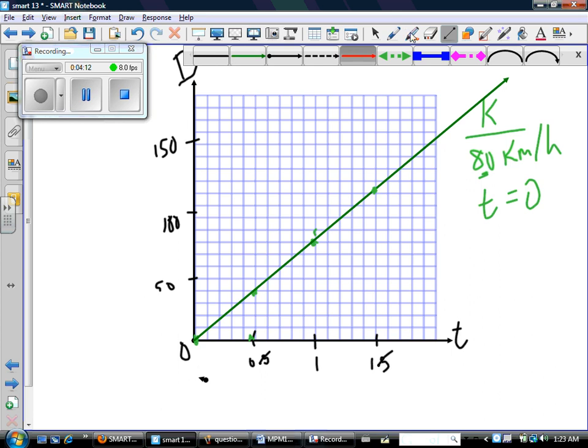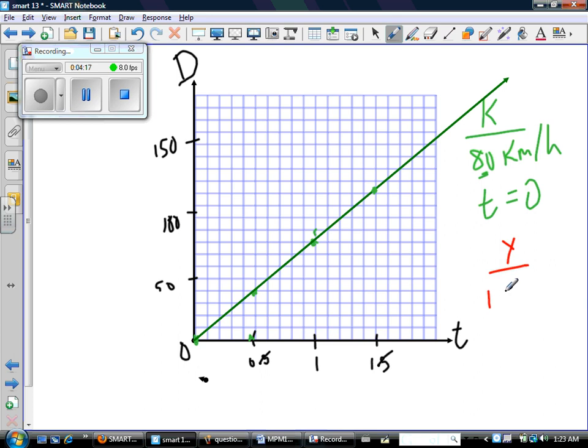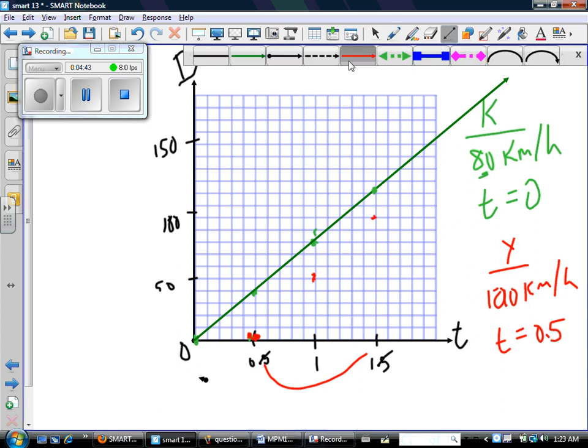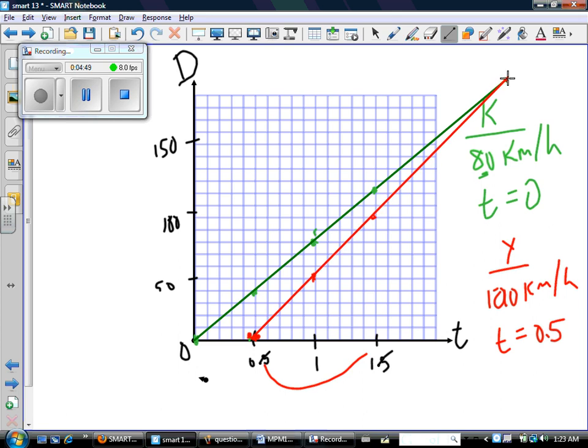Now, that was fine. The problem is, of course, that Yvette, who's going 100 kilometers per hour, doesn't start at t equals zero. Yvette starts here. Half an hour later. So in a half an hour, Yvette will go 50 kilometers. In a whole hour, she'll go 100 kilometers. So let's see what her line looks like. And we're using red. So there's Yvette.